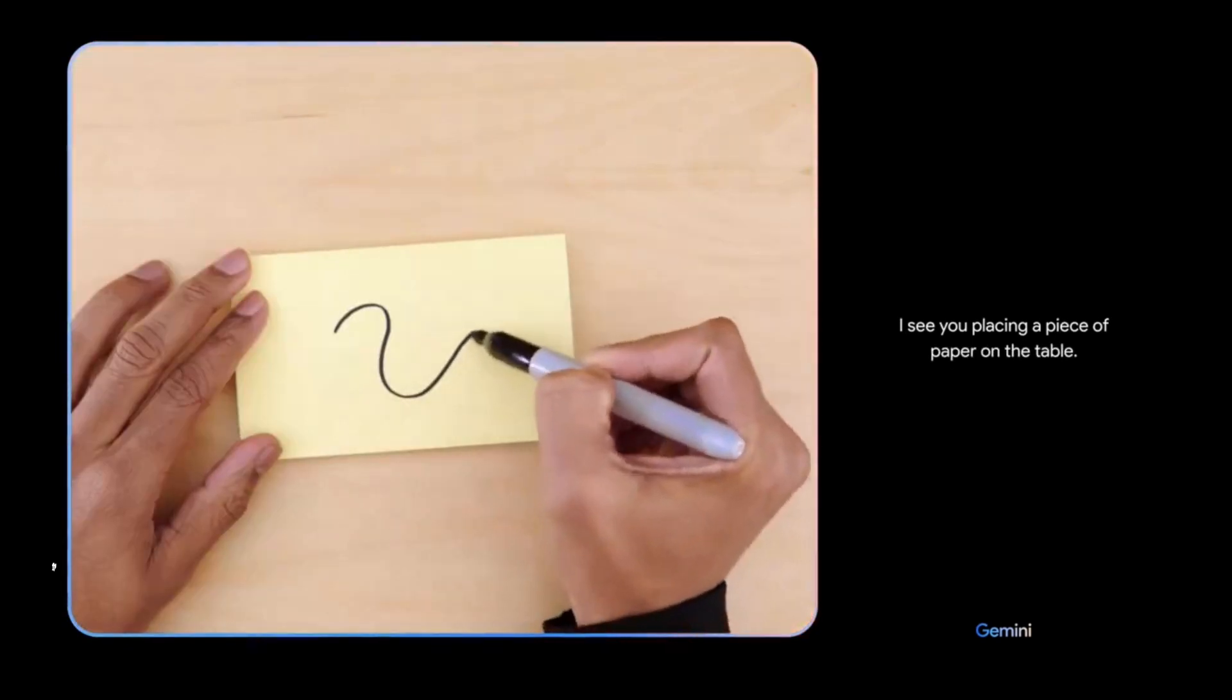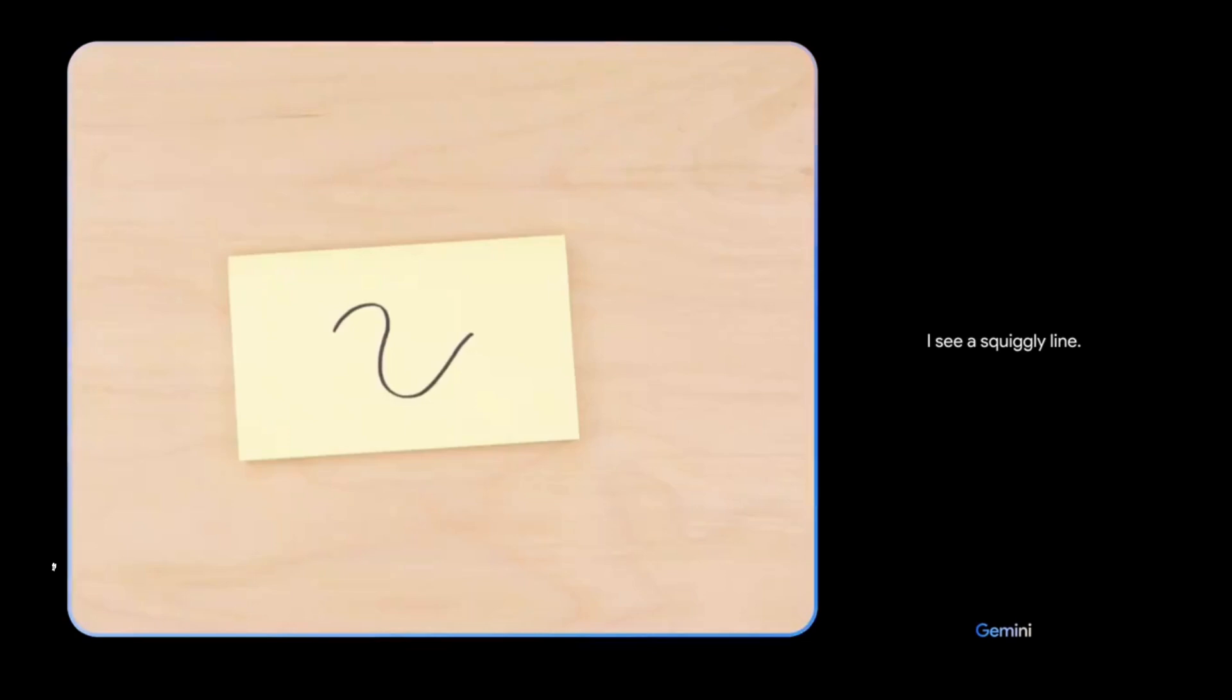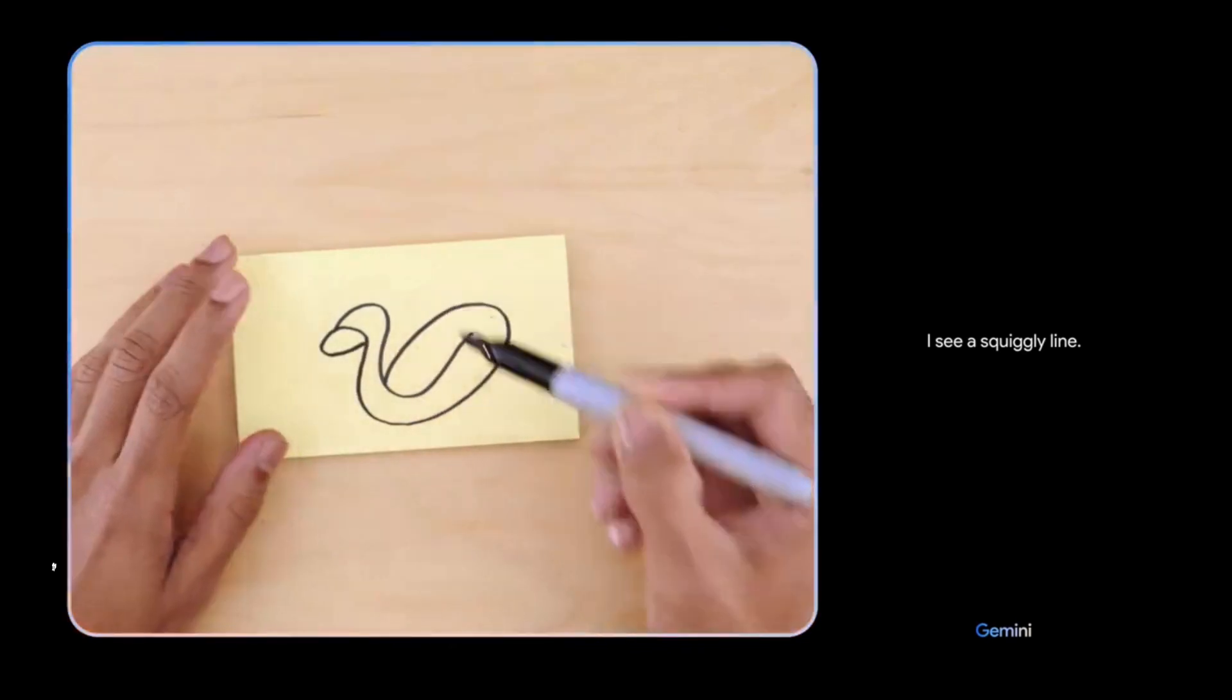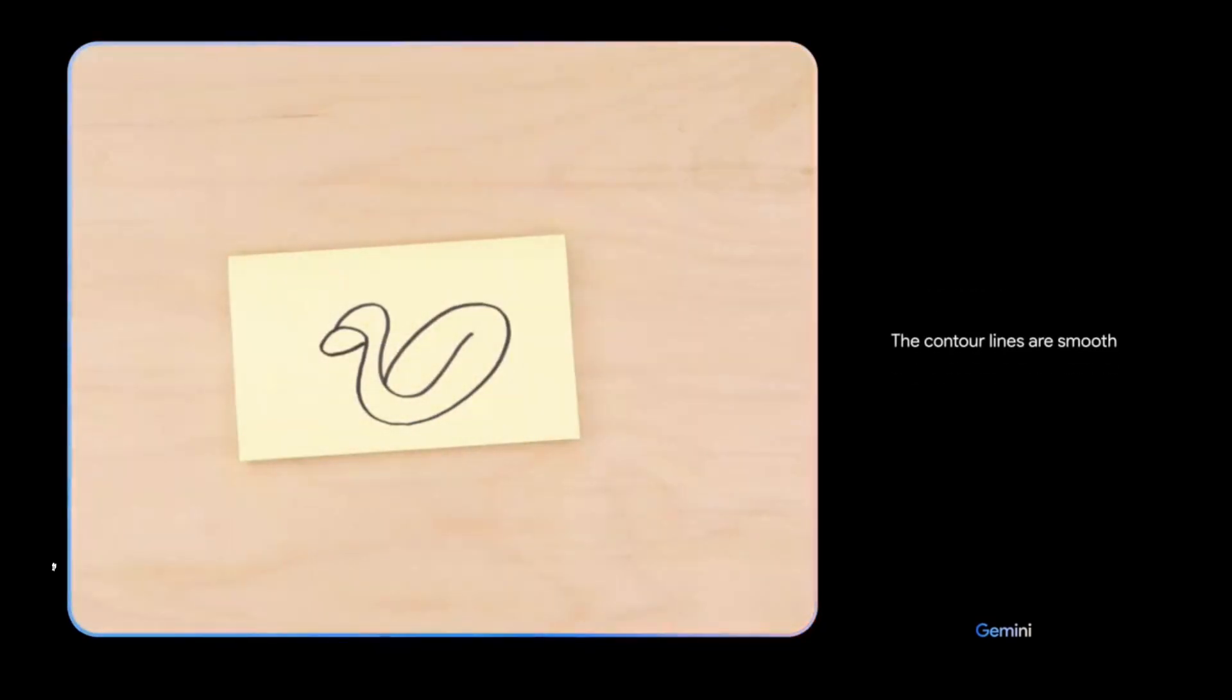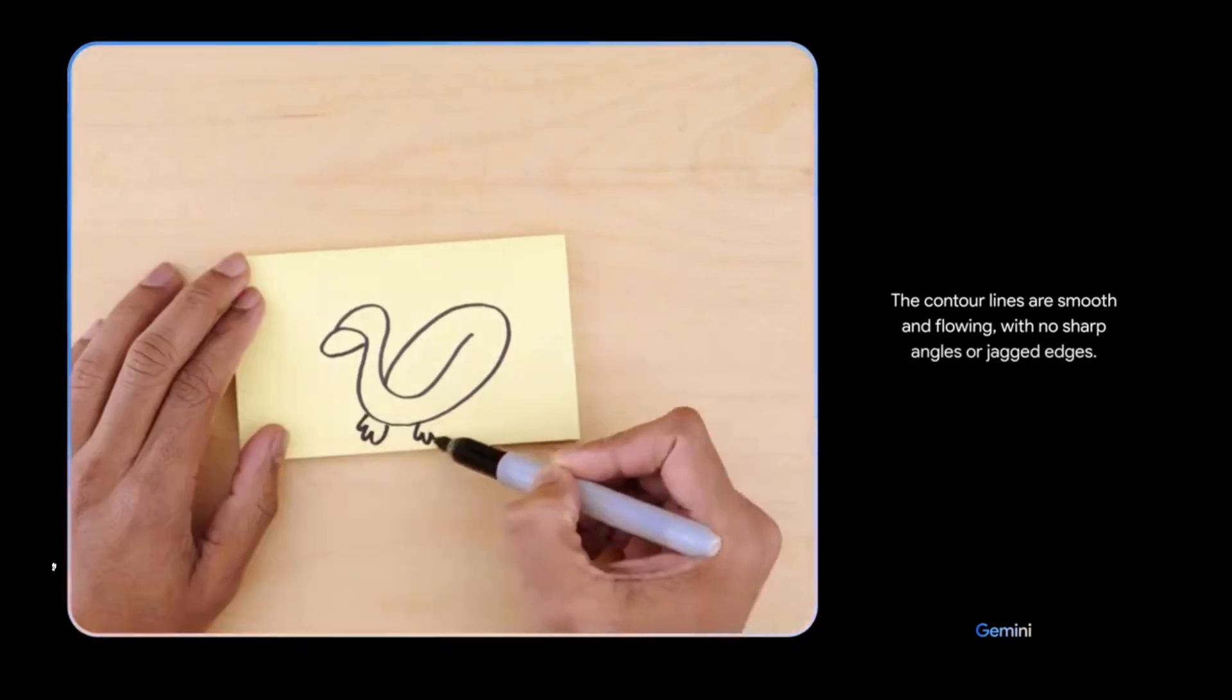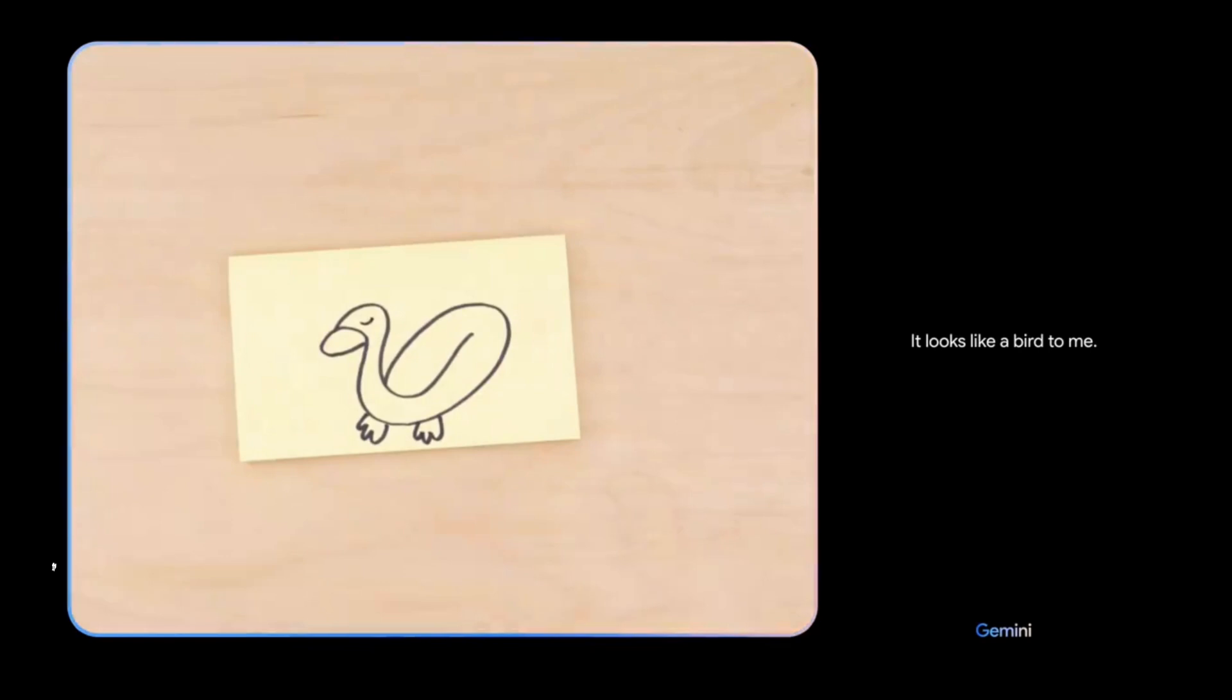All right. Testing Gemini. Here we go. Tell me what you see. I see you placing a piece of paper on the table. I see a squiggly line. What about now? The contour lines are smooth and flowing with no sharp angles or jagged edges. It looks like a bird to me.